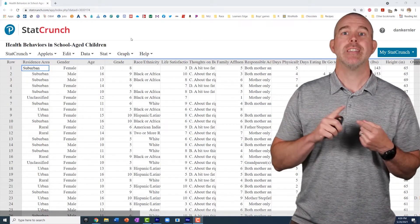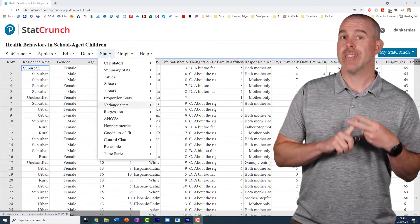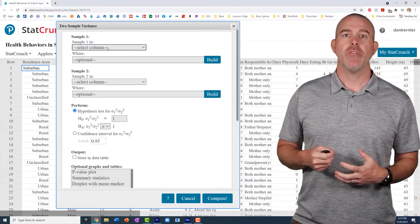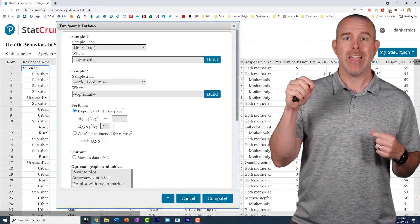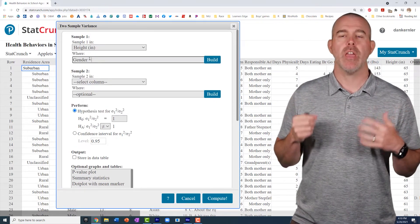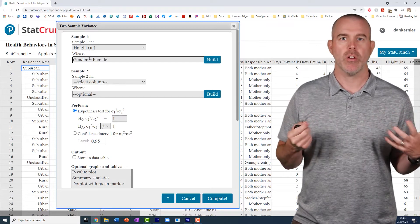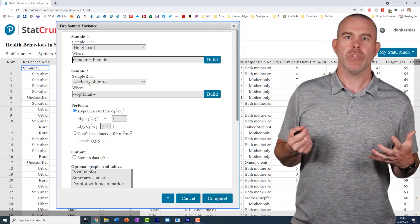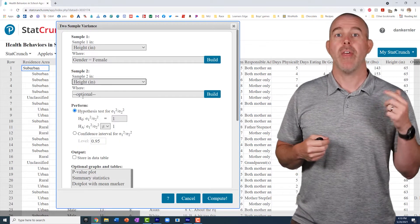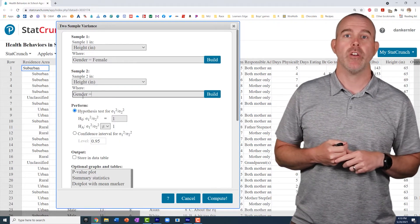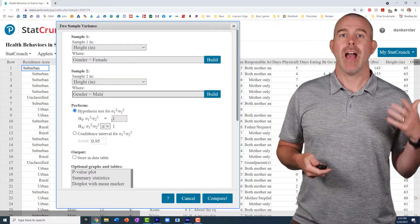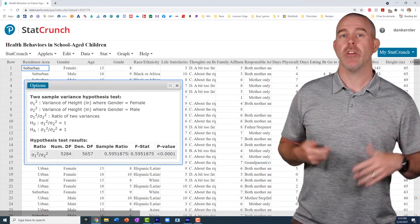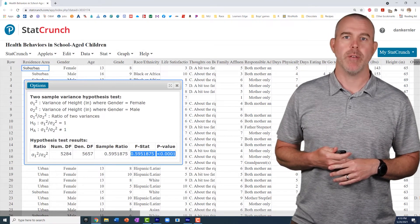In StatCrunch, it's stats, variance stats, two sample with data. And then for the first one, we want to do heights. And then we want to choose where gender equals female because we had girls were first, even though it's not super important here because it's not equal to. But we're going to do girls first. And then the second one would be heights where gender equals male. We're doing a hypothesis test. The null hypothesis is that the ratio is equal to one. So they're the same. And the alternative is that it is not equal to one.